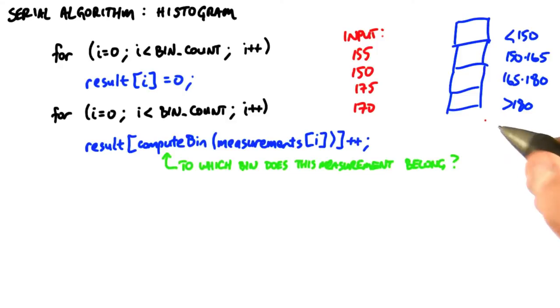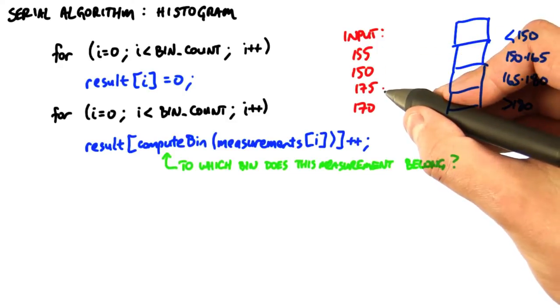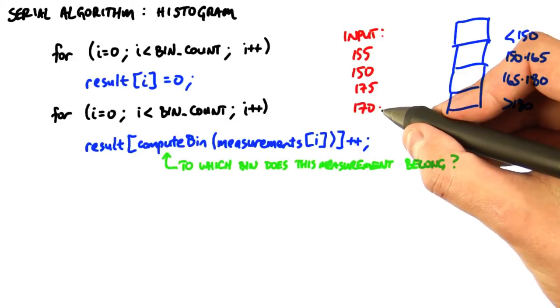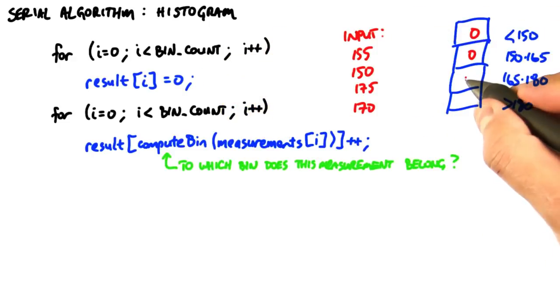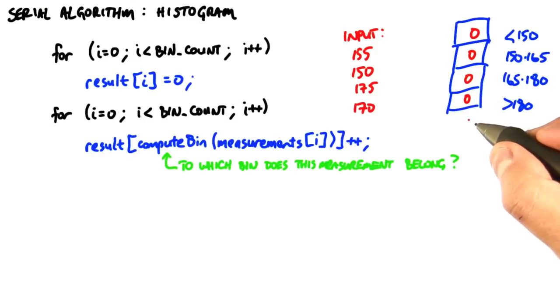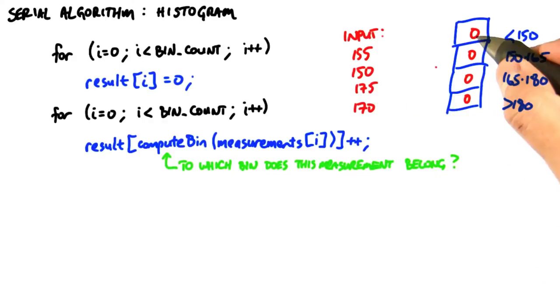So, now let's consider these four bins, and we're going to trace a program with the four measurements: 155, 150, 175, and 170 centimeters. The first loop here will initialize each of these bins to 0 items, and then we'll walk through these four measurements using compute bin to decide which bin they're in, and incrementing the values in those bins.